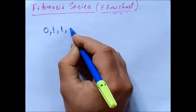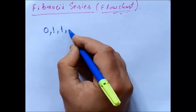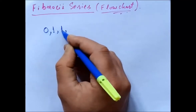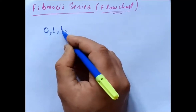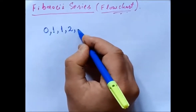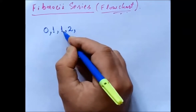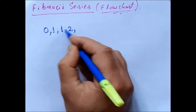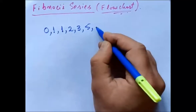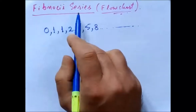Now the fourth element of the series will be the addition of the previous two: 1 plus 1 equals 2. The next number will be the sum of the last two numbers: 2 plus 1 equals 3, then 3 plus 2 equals 5, then 5 plus 3 equals 8. It will go on — this is called the Fibonacci series.